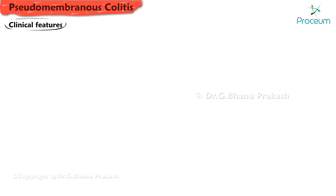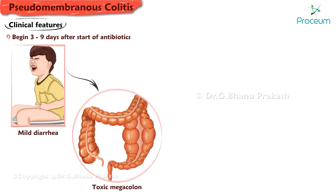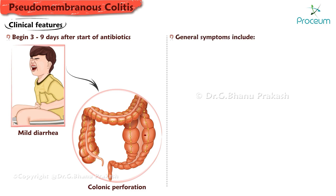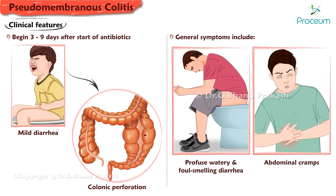Regarding clinical features, symptoms in most cases begin three to nine days after the start of antibiotics. Clinical severity ranges from mild diarrhea to toxic megacolon and, in some severe cases, even to colonic perforation. General symptoms include profuse watery and foul-smelling diarrhea, abdominal cramps and tenderness in the right lower quadrant, and increased temperature.